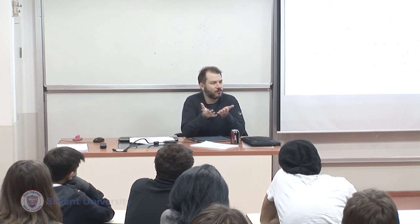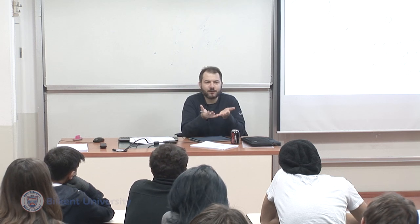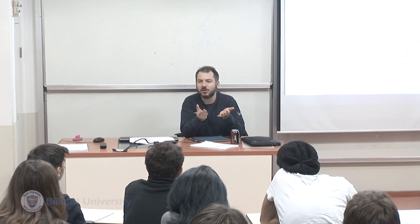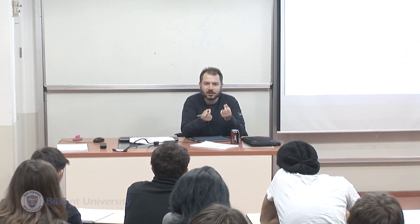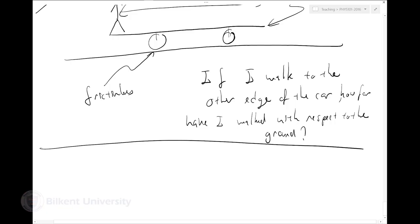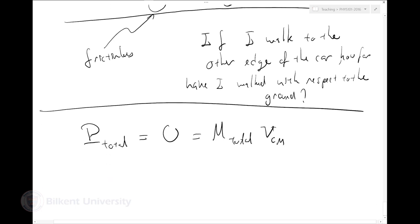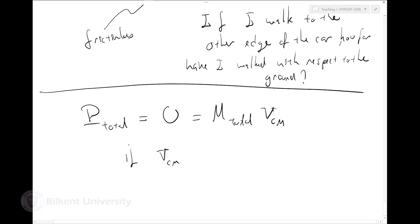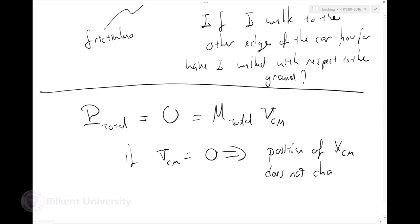The total initial momentum is zero, which means the velocity of the center of mass is zero. So if the velocity of the center of mass stays zero during the motion, the position of the center of mass does not change during the motion.